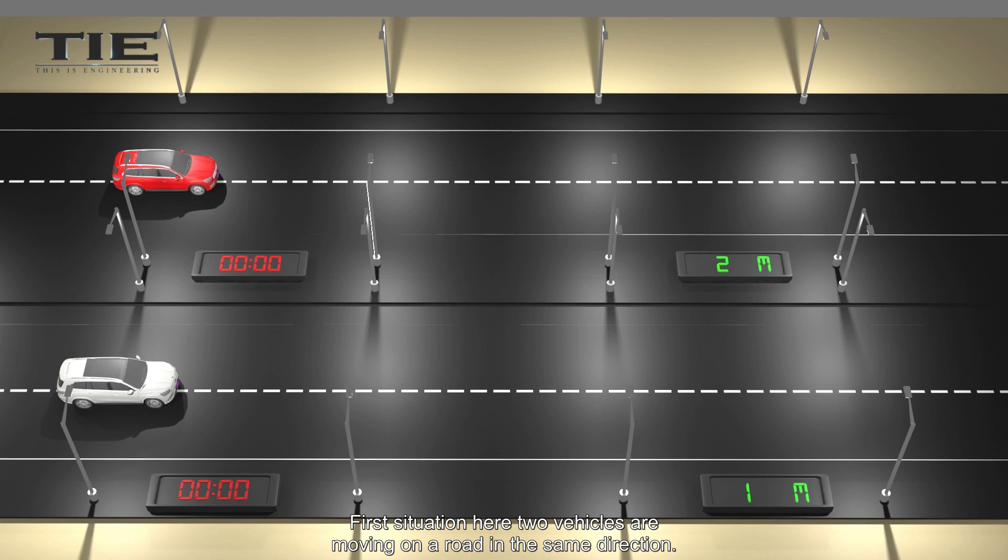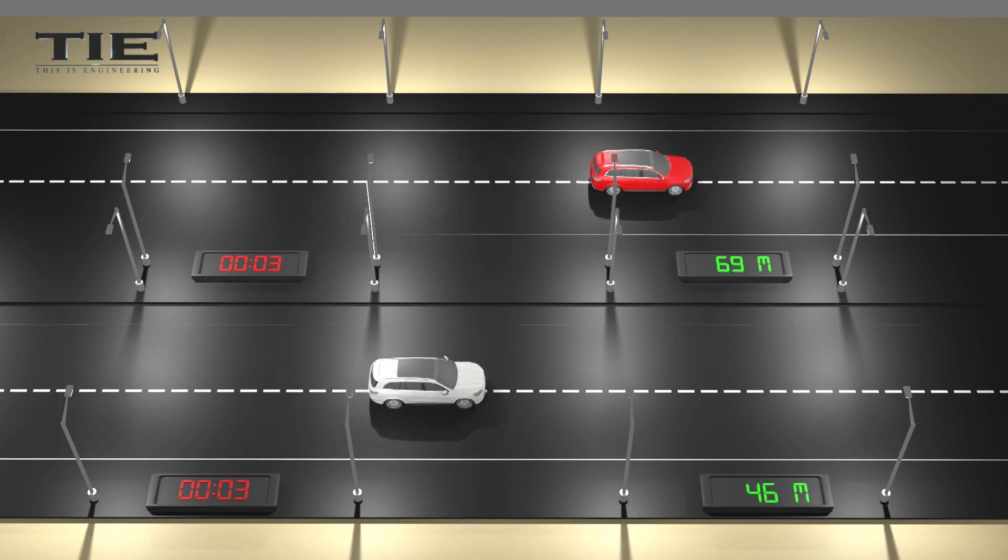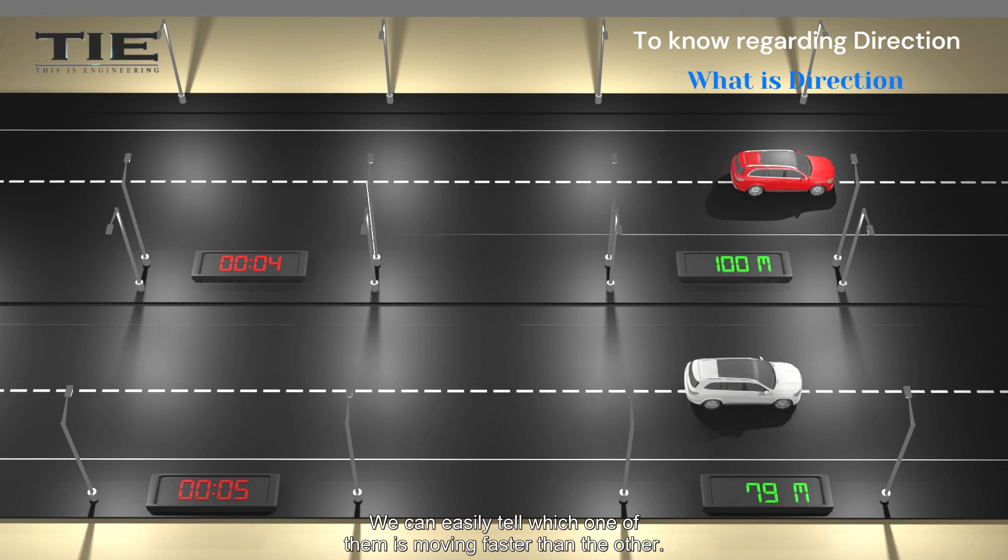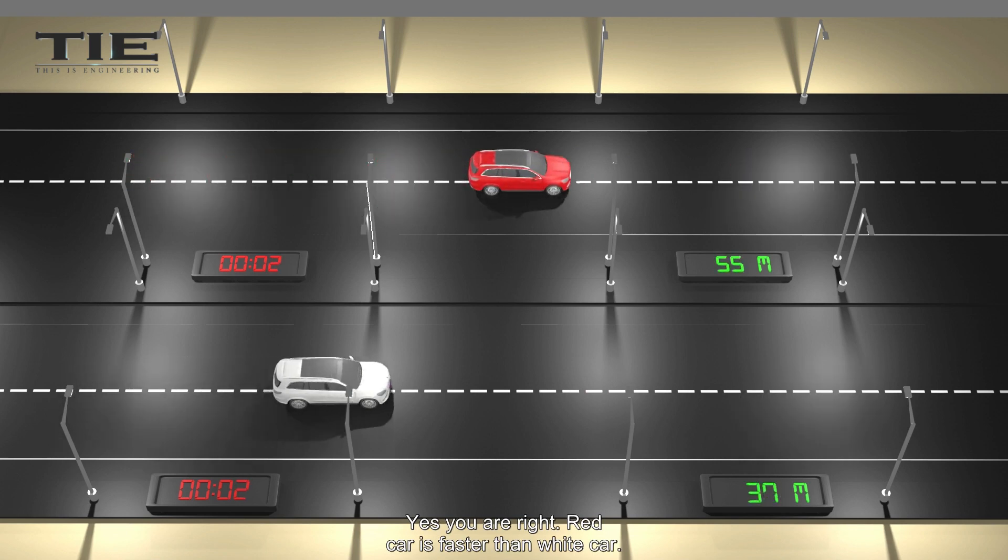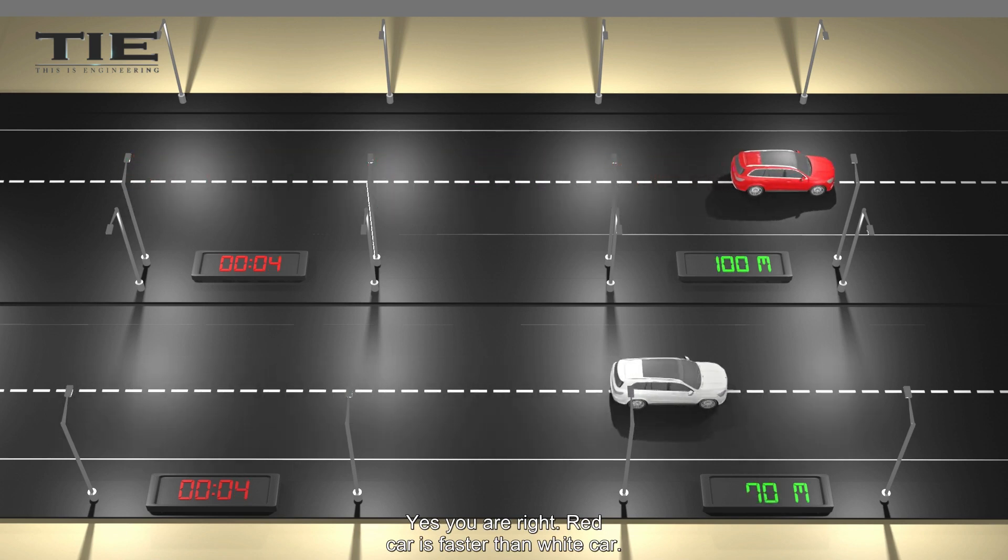First situation here: two vehicles are moving on a road in the same direction. We can easily tell which one of them is moving faster than the other. Yes, you are right. Red car is faster than white car.